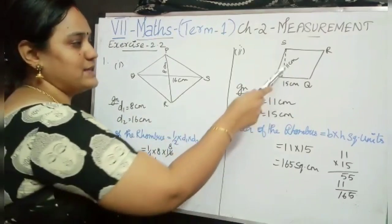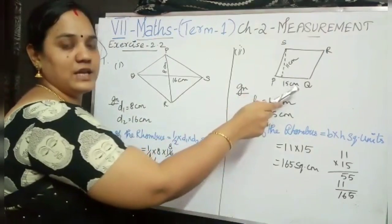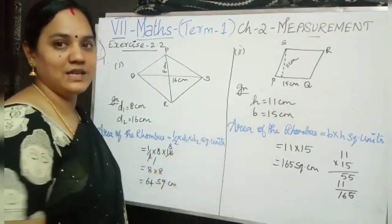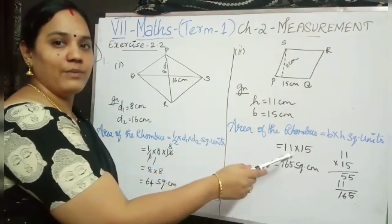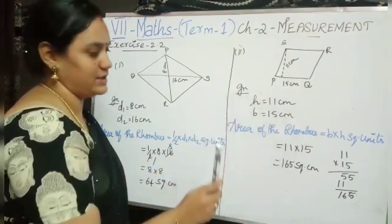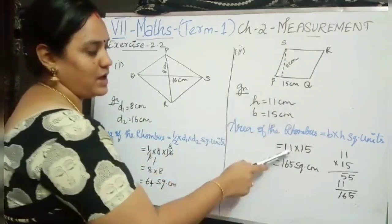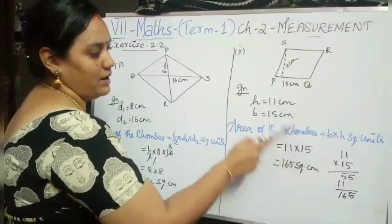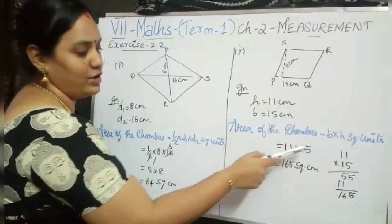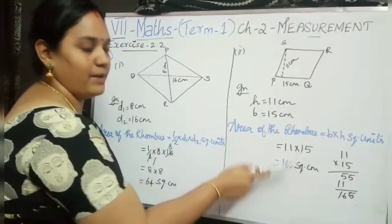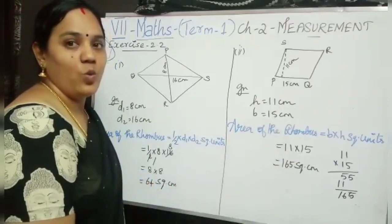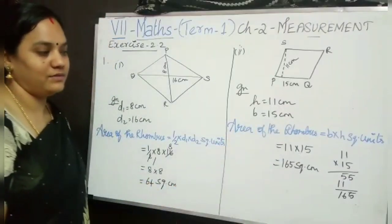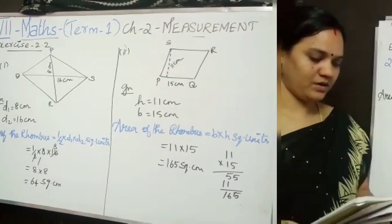Here base is given as 15 cm and height is given as 11 cm. So we are using the formula base into height. I have multiplied both the base and height, that is 11 into 15. My answer is 165 square centimetre.